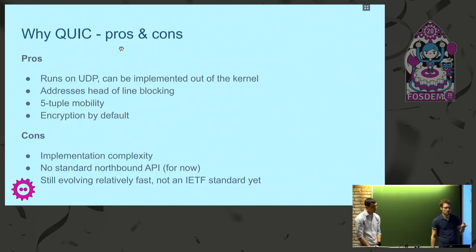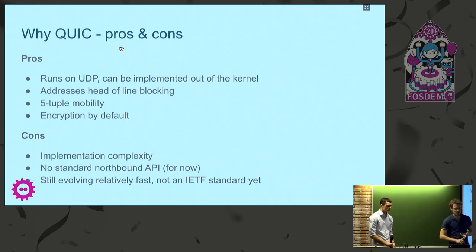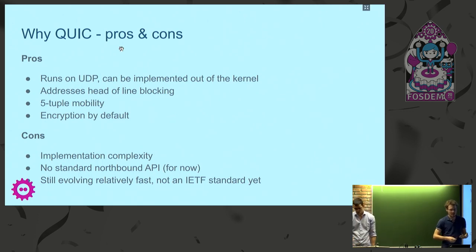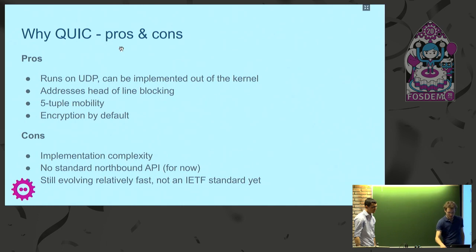To recap pros and cons: the cool thing about it is that it runs on UDP, so it can be implemented out of the kernel and can evolve quite fast, which is nice because it's not yet an IETF standard. It addresses head-of-line blocking, provides mobility, and encryption by default. But on the cons, it has some complexity that we've tried to address by implementing it, and for now we don't have a very standardized northbound API — something we want to address in this talk.